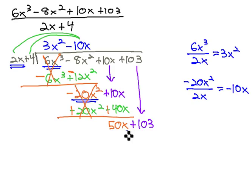As we repeat, we're going to divide the 50x by the 2x. 50x divided by 2x is going to reduce to 25, and the x's divide out completely, so we just have positive 25.